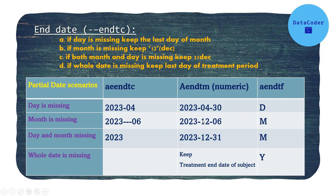For the end date examples: in the first scenario the day is missing and April is present, so we give the 30th — the last day of April — and the flag AENDTF is 'D'. In the second scenario the month is missing, so December (12) is imputed and the flag is 'M'. In the third scenario only the year is present with month and day both missing, so 31st December is given and the flag is 'M'. When the whole date is missing, follow your SAP or use the subject's treatment end date. For the SAS coding, you can use the INTNX function, which has a provision to find the last day of the month correctly; for the others, concatenation is sufficient.